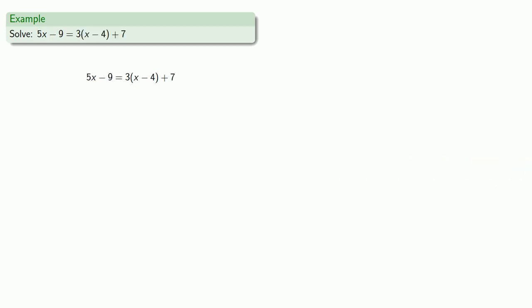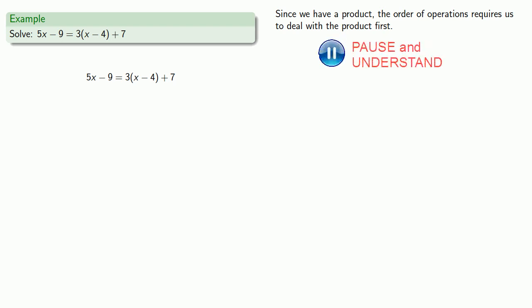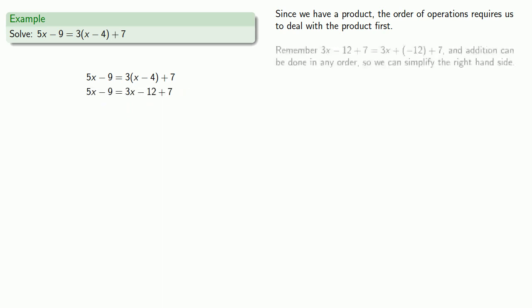How about a more complicated equation? So over on the left-hand side, I have a difference. Over on the right-hand side, I have both a sum and a product. The expression is actually a sum, but since we have a product, the order of operations requires us to deal with the product first. So that means I'm going to expand this product 3 times x minus 4.